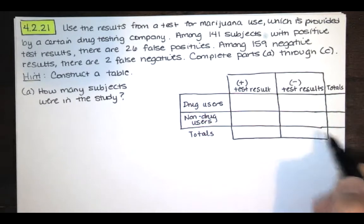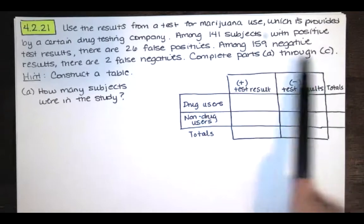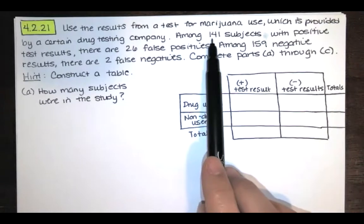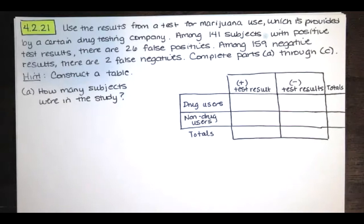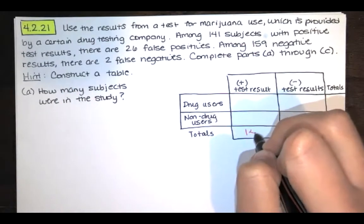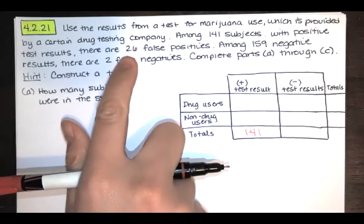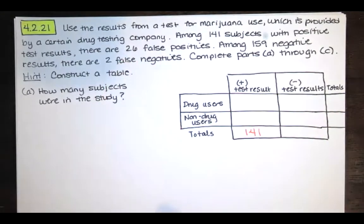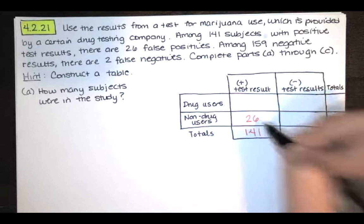If you add these two guys together, you're going to get the total number of tests or the total number of basically data points or sample values in this study. So let's fill this in, given what they tell us up here. It says among 141 subjects with positive test results. So let's start with that. There are 141 that have positive test results. There are 26 false positives, and what that means is that you have a positive test result where the person did not actually use drugs.